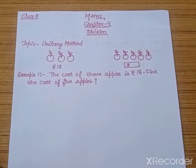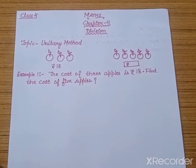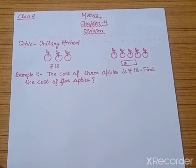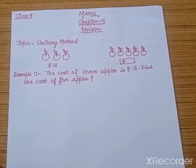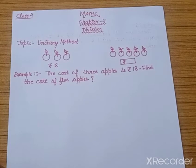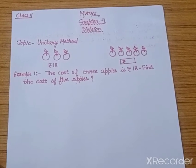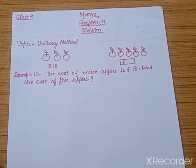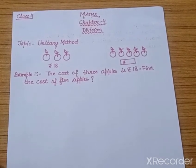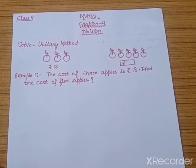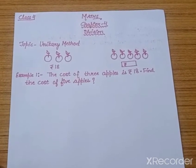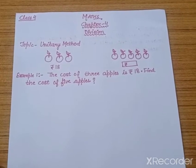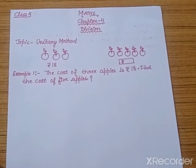The first operation that we will apply is division, and after that we will find the value of the required number of units by multiplying. So students, always remember that in the Unitary Method, we have to follow two things: first division and then multiplication. Now let us do some examples.